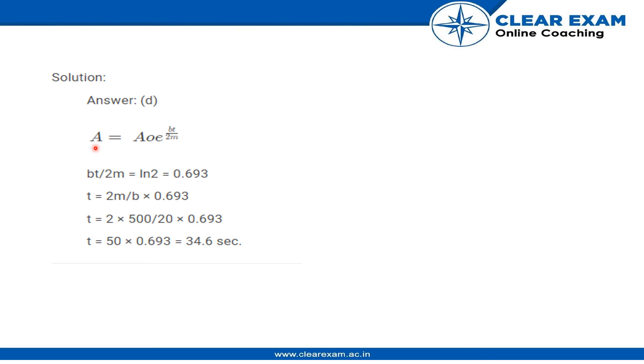So bt/2m becomes ln(2), which is 0.693, and we can isolate t from the equation to get t equals 2m/b times 0.693.